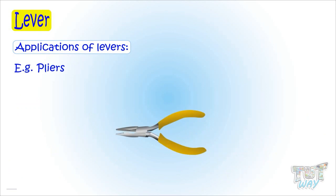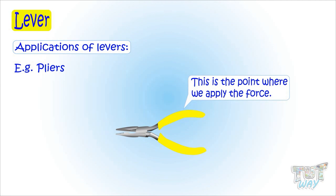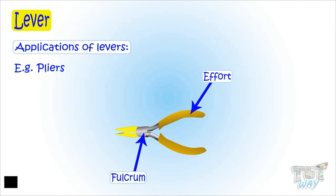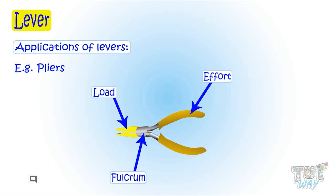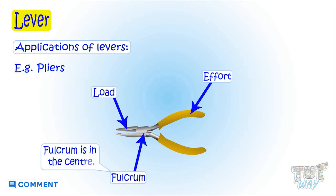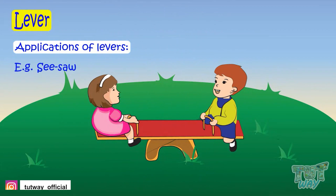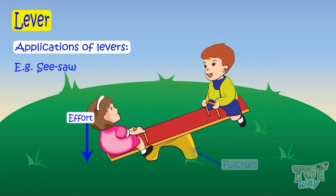Here we have another object — a pair of pliers. This is the point where we apply force, so this is the effort. This is the fixed point, so it's the fulcrum, and this is where the applied force acts on the object, so this is the load. Again, the fulcrum is in the center, so this too is a first class lever.